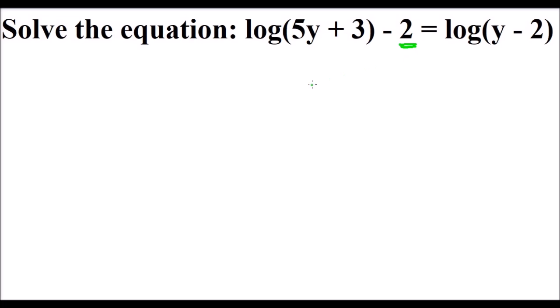The number whose logarithm is 2 is 100, working with base 10. So we can rewrite our equation as logarithm of 5y + 3 minus, instead of 2, now we write the logarithm of 100.